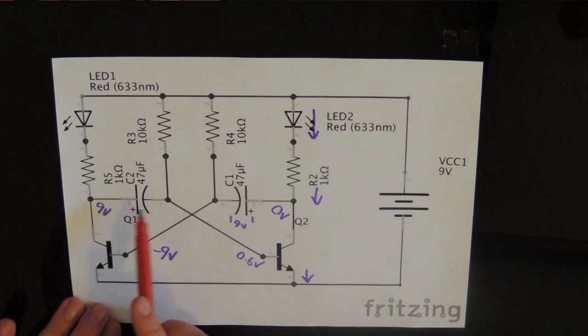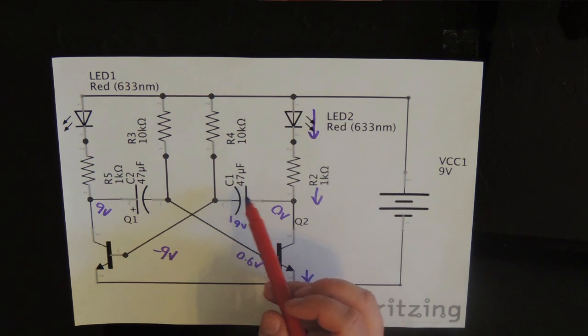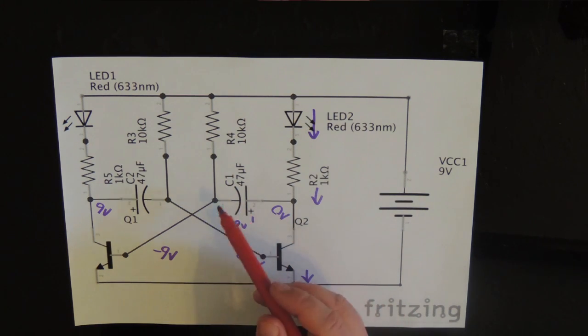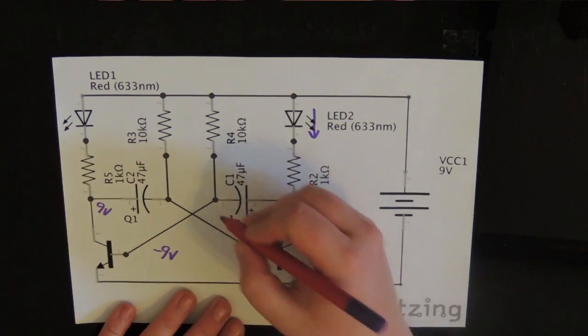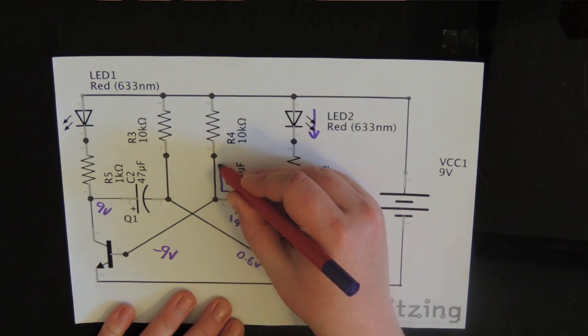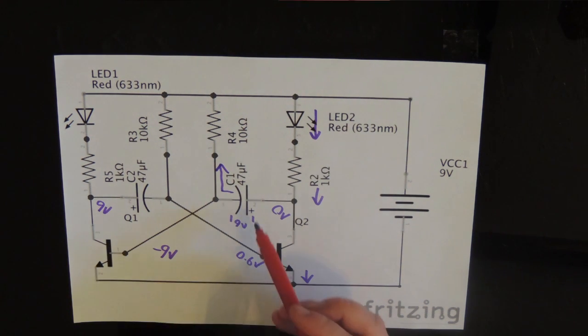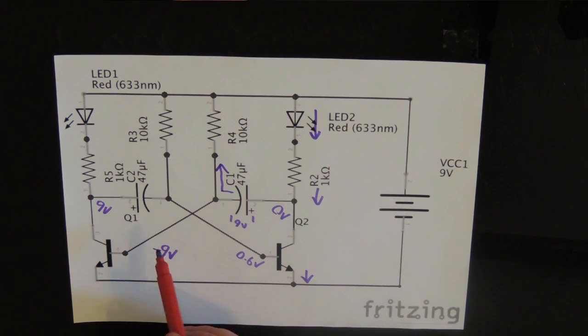So this capacitor starts to charge up. In the meantime, C1 also starts to discharge through R4, which means that the voltage at its negative plate starts climbing up towards 0V and will eventually pass the 0.6V turn-on voltage.